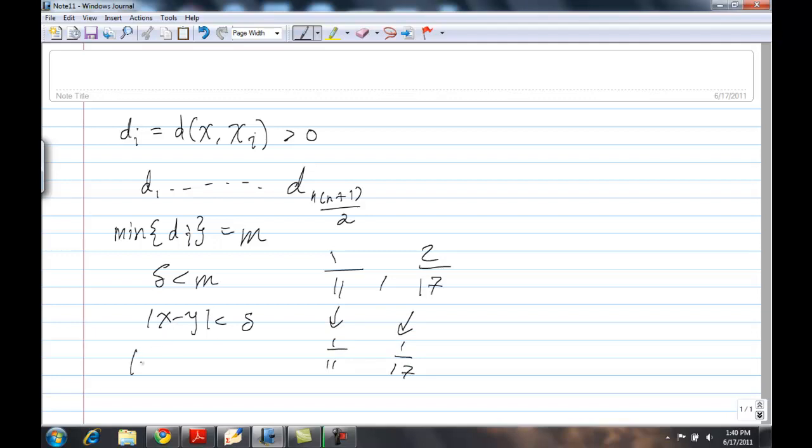then, if x minus y is less than delta, I can ensure that f of x minus f of y is going to be less than a tenth. And, you can do this for anything. You can do this for 1 over 100, 1 over a million.